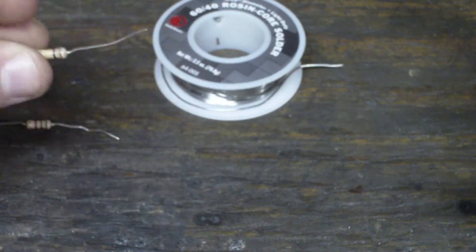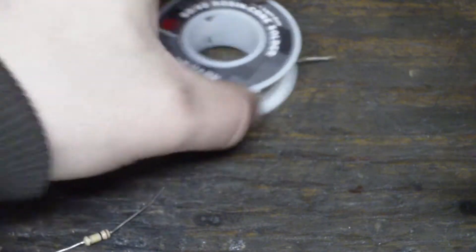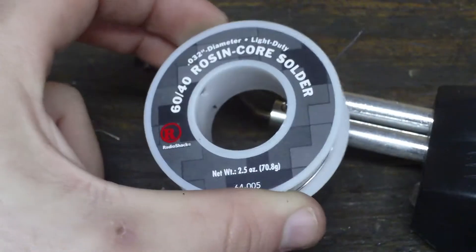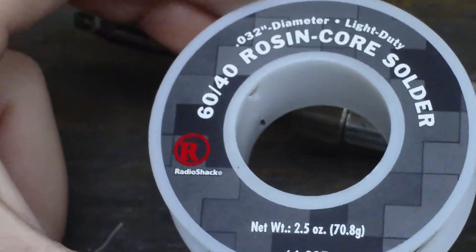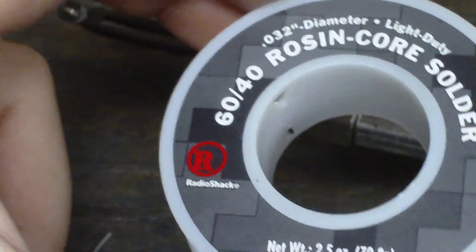And you need whatever you're going to be soldering, and of course your solder. Now this is rosin core 60-40, tin lead. Get it at Radio Shack. This is like five bucks.